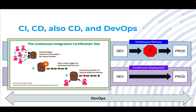Let's start by demystifying some of these common terms: CI, CD, and DevOps. How do they fit together? We'll start with Continuous Integration. Shown here is the Martin Fowler Continuous Integration Certification Test. It asks three questions to determine whether you're doing CI or not, starting with whether every developer is committing at least daily to a shared mainline — meaning everyone is working in the same part of source control at the same time and integrating daily.